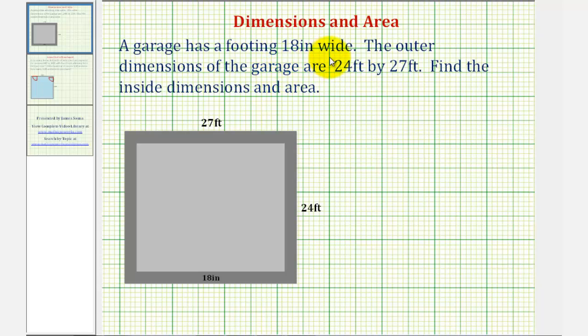A garage has a footing 18 inches wide. The outer dimensions of the garage are 24 feet by 27 feet. We want to find the inside dimensions and the inside area.